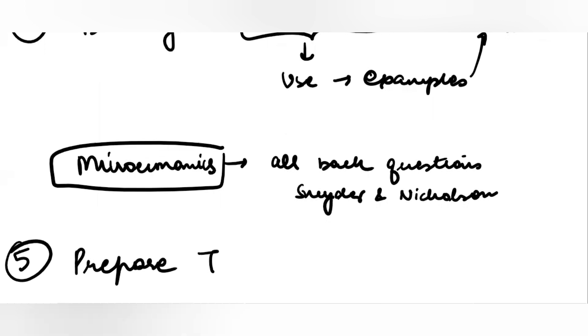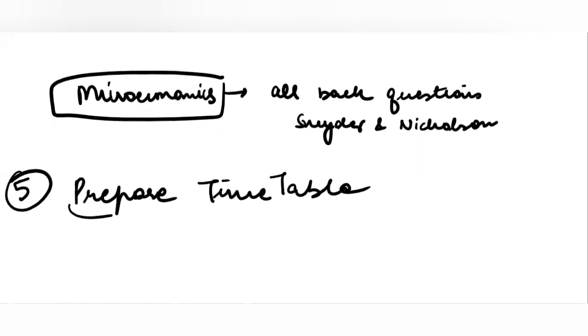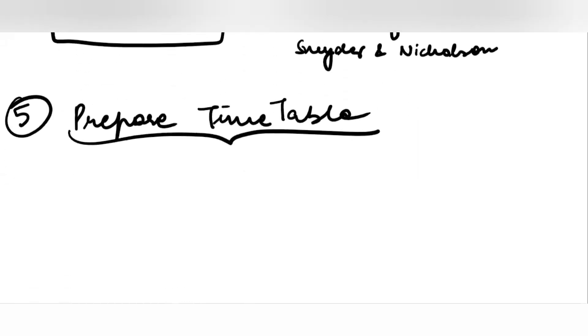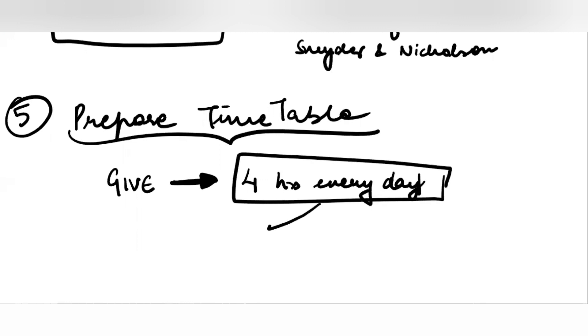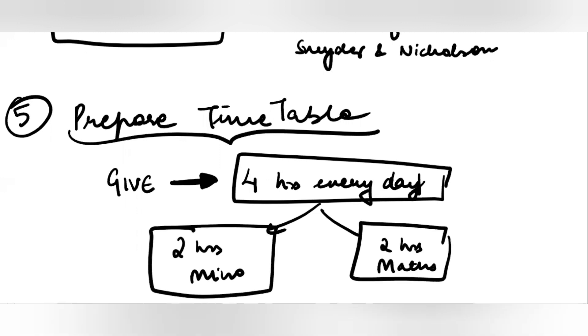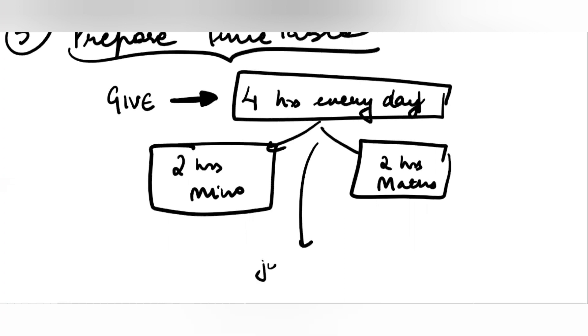Prepare a proper timetable. This is the time when you have to give at least, this is the minimum that I am saying, at least four hours every day. Pick two subjects simultaneously, give four hours every day. So, two hours of micro and two hours of maths. Finish these thoroughly. Take all the past year questions, solve them, then jump to the next subjects.